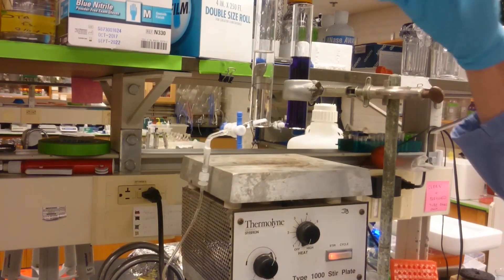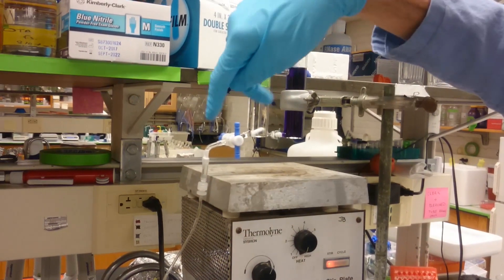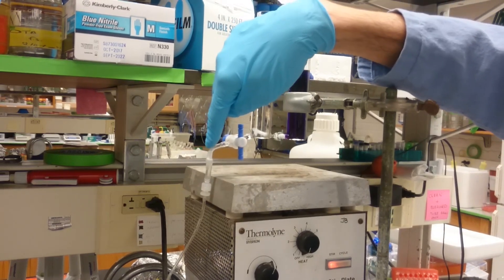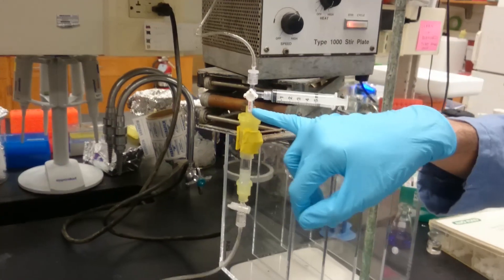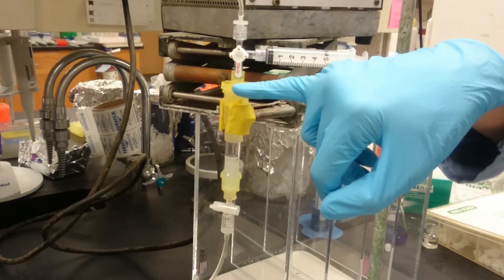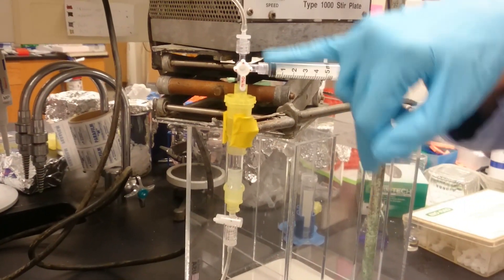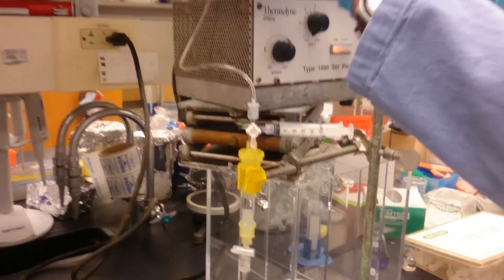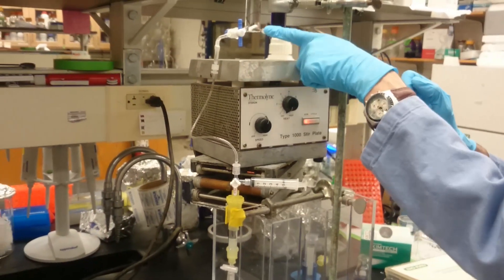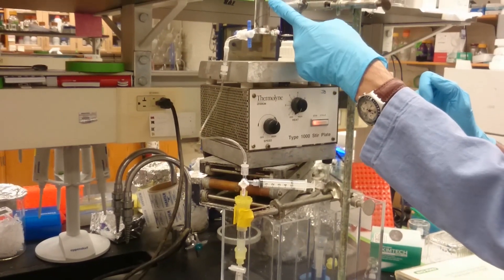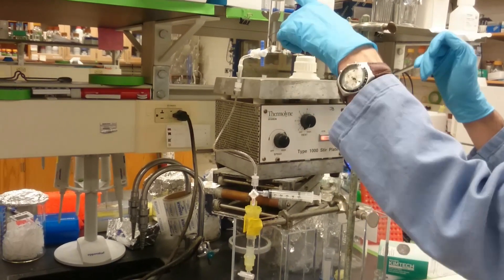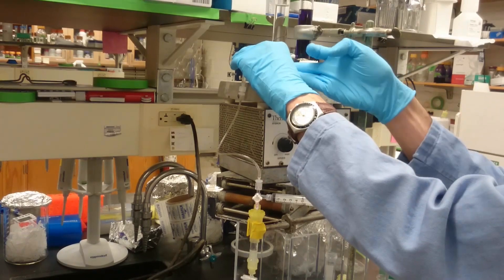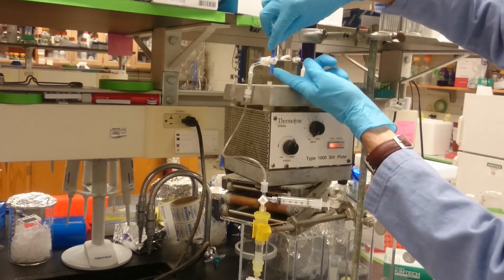So to get this thing started, the first thing you need to do is to prime this line, getting all the air out of it. We do that by using this three-way valve on our column, having it closed to the column but open to the syringe and to the buffer reservoir. I'm just going to start by opening up this one here so that liquid can drain from here into there, and actually I should probably top this off.